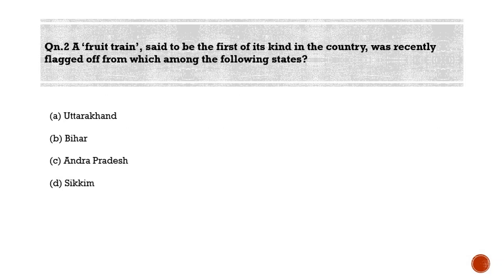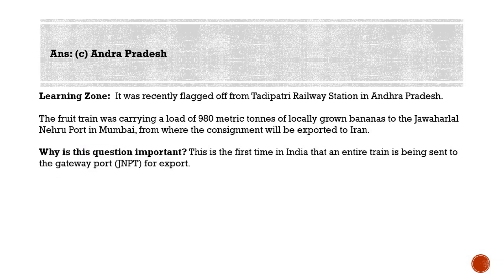Second question: a fruit train, said to be the first of its kind in the country, was recently flagged off from which among the following states? Option A: Uttarakhand. Option B: Bihar. Option C: Andhra Pradesh. Option D: Sikkim. The correct answer is Option C, Andhra Pradesh.